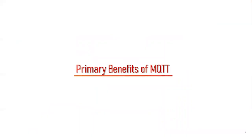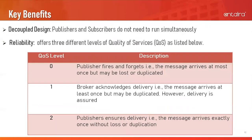Let's look at some primary benefits of MQTT. The decoupled design is useful in a scenario where we have limited network bandwidth, since publishers and subscribers don't need to run simultaneously. Another benefit is reliability, which offers three different quality of service levels. When the quality of service level is set to zero, the publisher sends the message only once and the MQTT broker doesn't acknowledge receipt. There's no guarantee that the MQTT broker has received the message sent from the publisher.